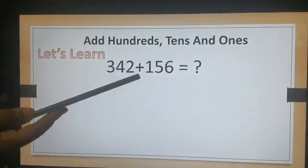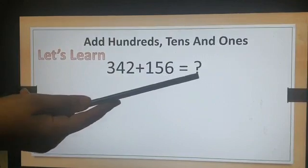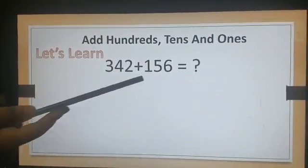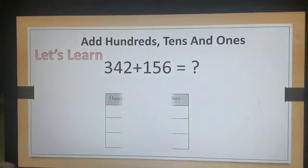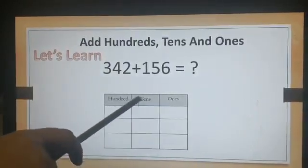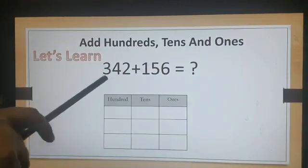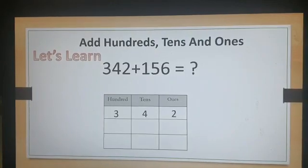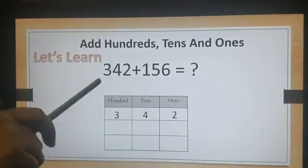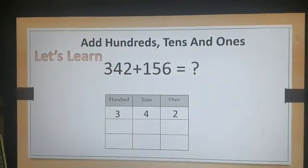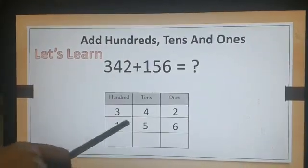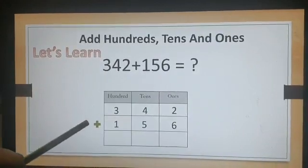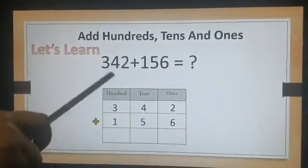342 plus 156. Now I want to put these numbers in place value chart. Look at here, 100s, 10s, and 1s. I'm putting the numbers here. 342, 156. Now the plus sign. Carefully, don't put it in the wrong place.